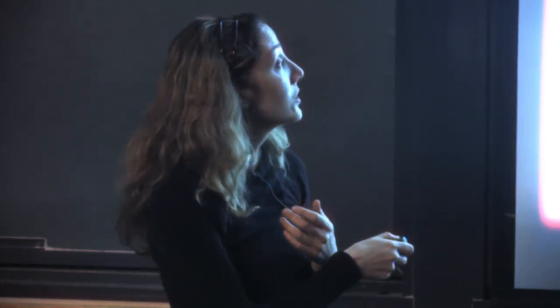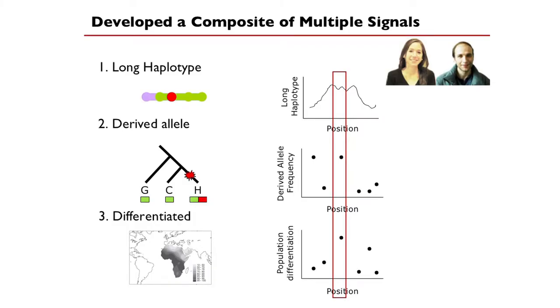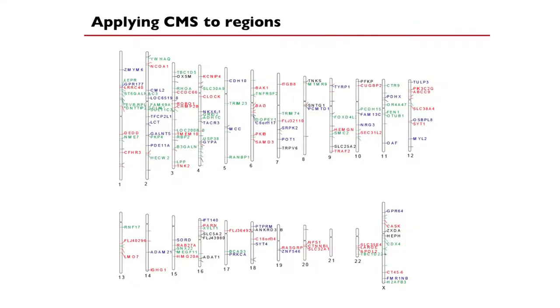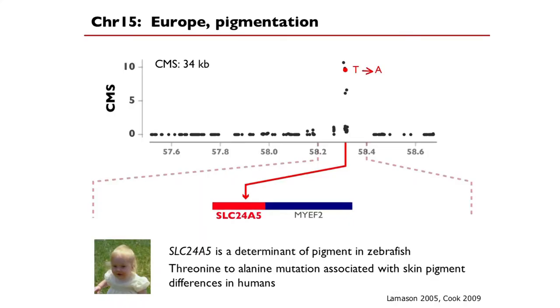The problem with the long haplotype test alone is it's so powerful that all polymorphisms within that region will be dragged up on a long haplotype, so they all have a long signal. Across a 600 kilobase region, there are many polymorphisms with a very high score, making it hard to mine out what's going on. When we applied our CMS test, because all of those tests are quite independent, it reduces the noise. The probability of having a high score by all tests is very low, unless you're the causative mutation or right next to it.